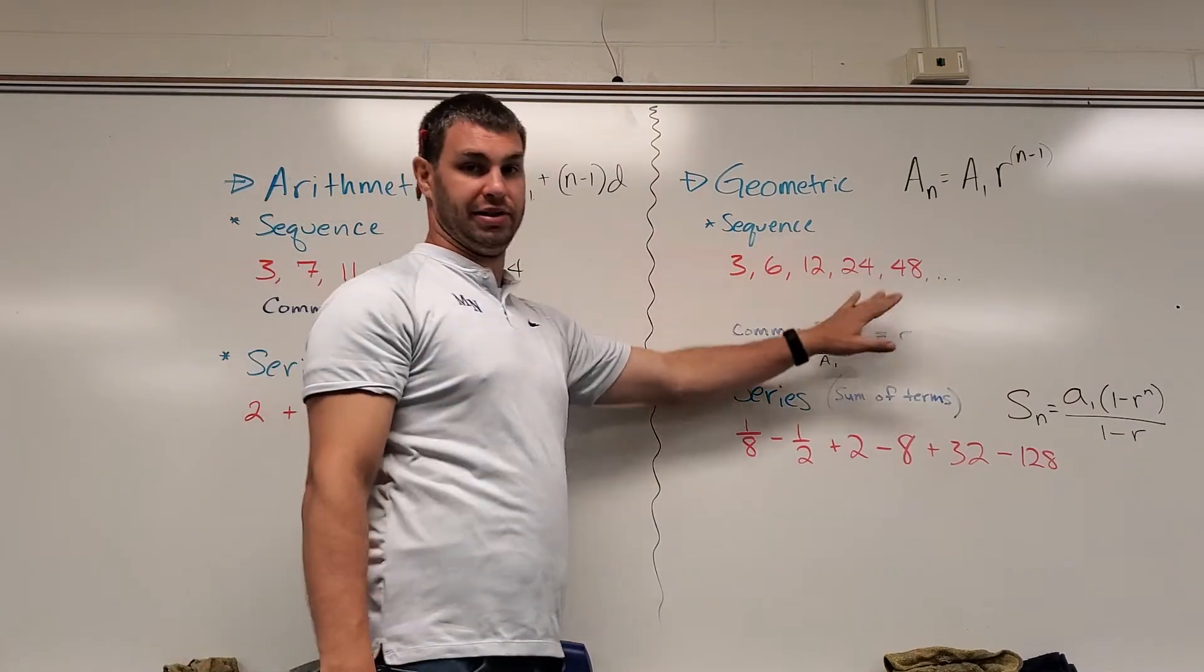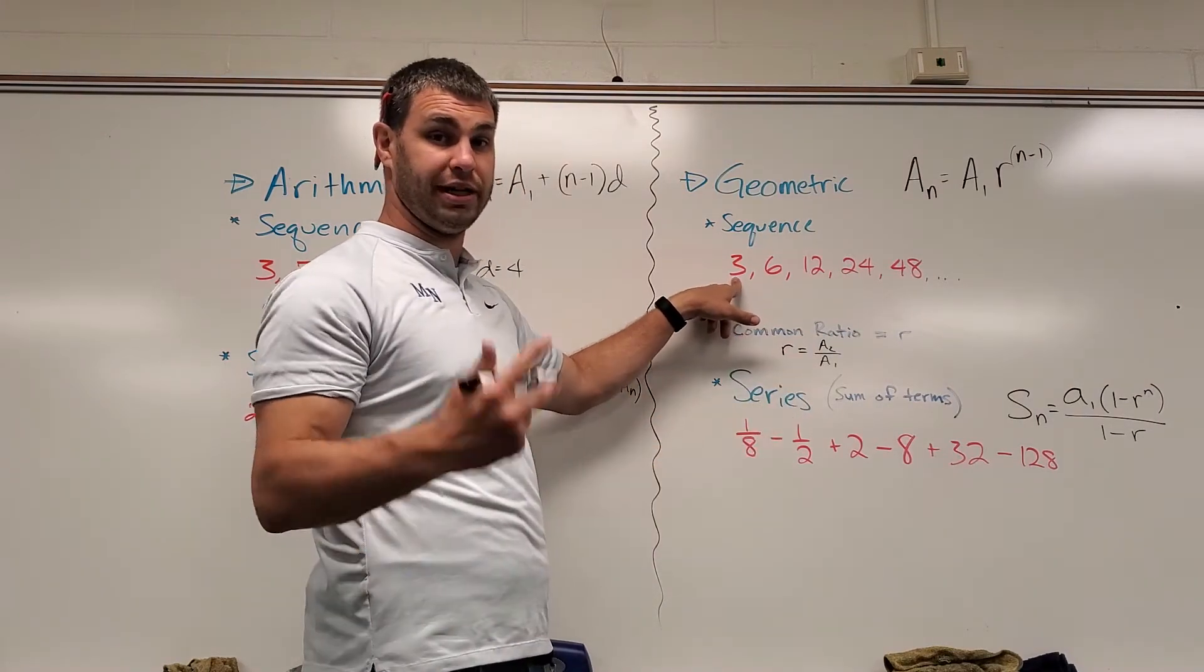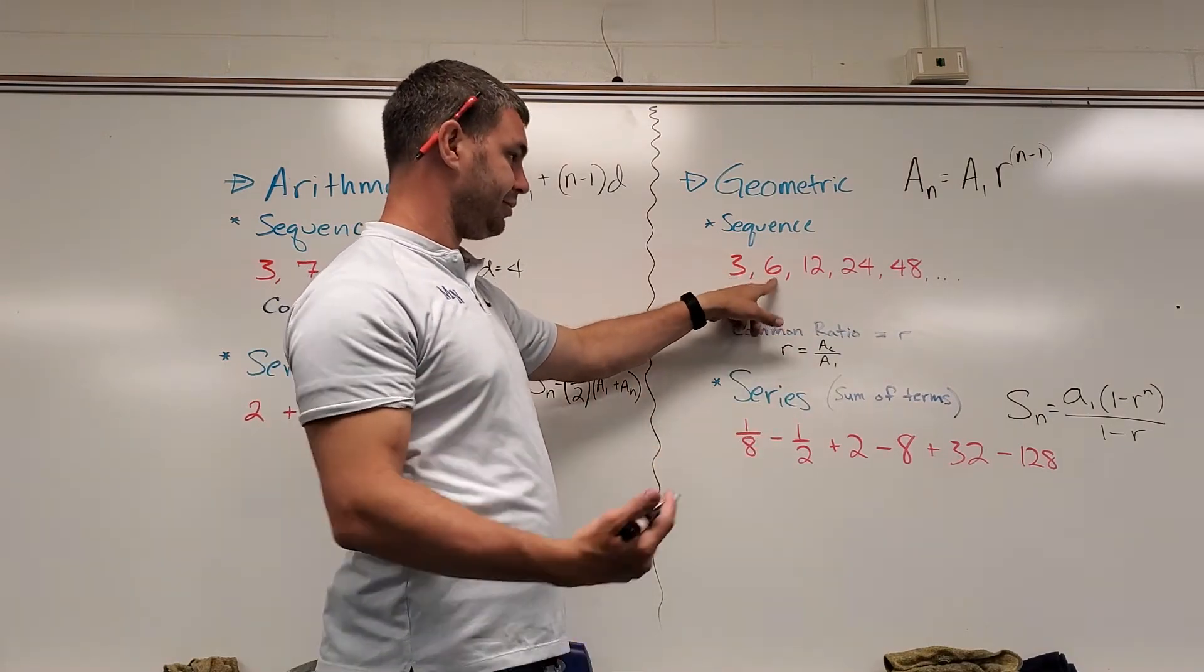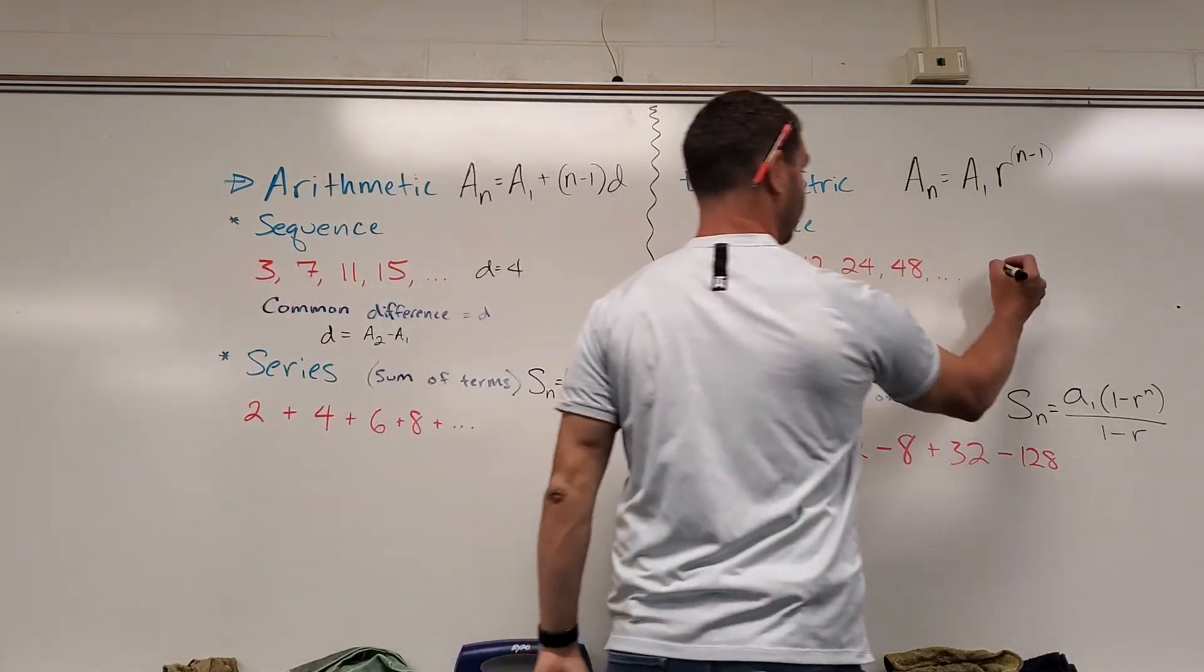So if I look at this one, to go from 3 to 6, of course I multiply by 2. Does that still work? 6 times 2 is 12, 12 times 2 is 24, and so on. So here the common ratio for this one is 2.